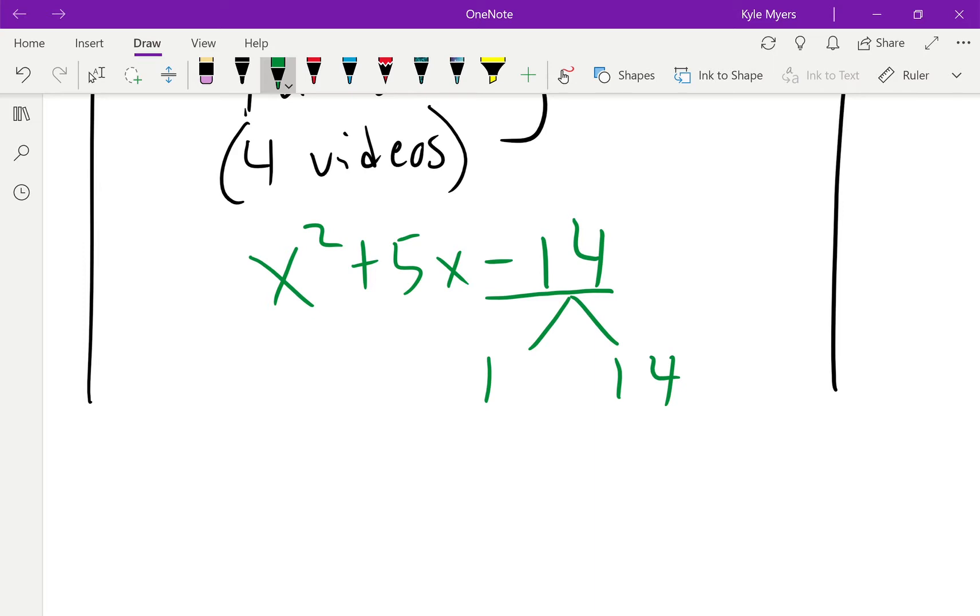One of these numbers has to be negative because I need a negative 14 when I multiply. Since I'm trying to get a positive number when I add, I want to make the 14 positive and the 1 negative. If I do negative 1 plus 14, I get positive 13. Unfortunately, positive 13 is not the same as positive 5, so I have to keep going.